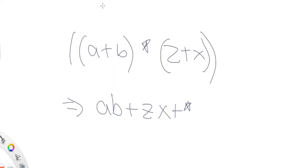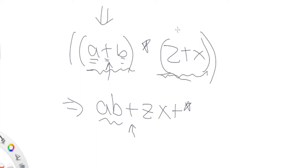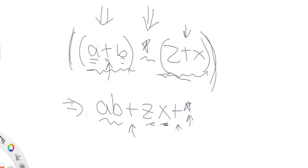Let's look at another example. In this one, `a` and `b` are inside the first parentheses, so we print out `a b` first. Then we have the plus operation, which comes second. Now we evaluate the next parentheses, which is `z + x`. So we print out `z` and `x`, then print the plus operand.